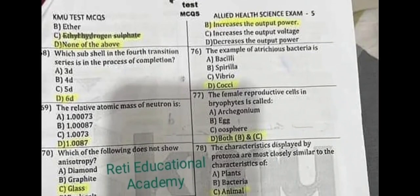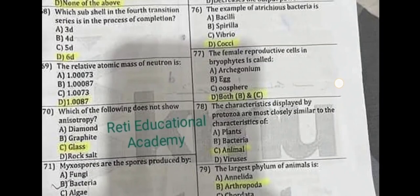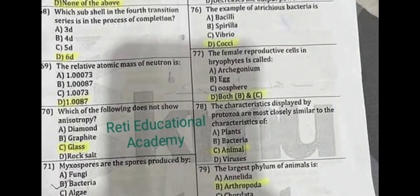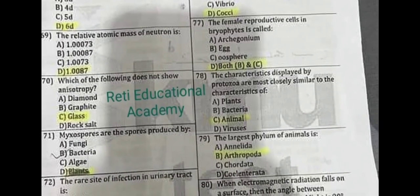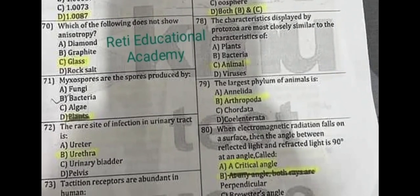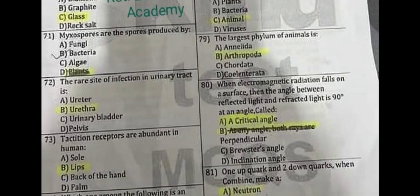Question number 76: An example of ulcerous bacteria is C. Question number 77: The female reproductive cells produced by bryophytes are called both B and C. Question number 78: The characteristics displayed by protons are most closely similar to the characteristics of animals. Question number 79: The largest phylum of animals is Arthropoda.